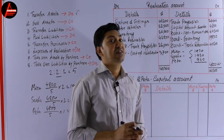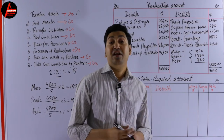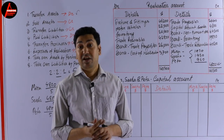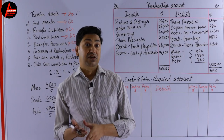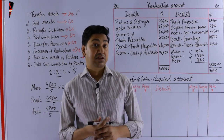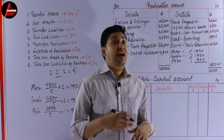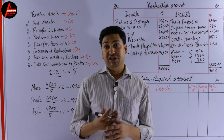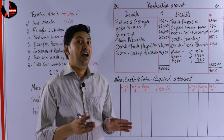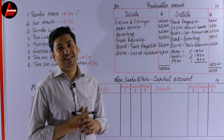So that's how to prepare the realization account. Practice more questions like this — this one is a bit easier, and next time I'll show you some more advanced questions. In part two, I'll show you the capital account and bank account for this dissolution of partnership. I hope you understood and enjoyed this lesson. Please subscribe to my channel, share with your friends if you found it helpful, and I'll see you soon with part two.